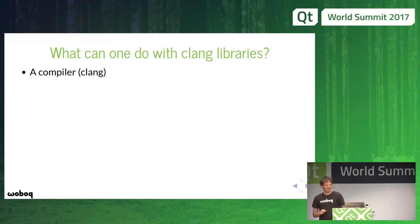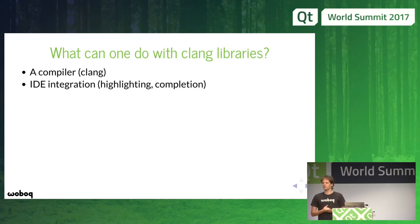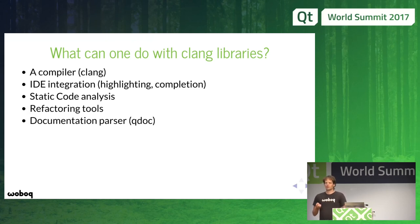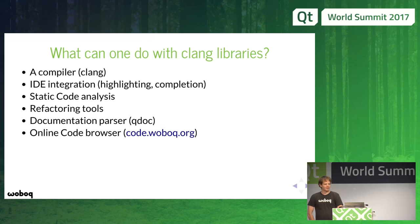We can do a compiler, of course — that's Clang. But we can also use those libraries to have the code model so the IDE understands C++. That's how we can do highlighting and completion. IDEs like Qt Creator are now moving to Clang for the code model, and KDevelop is already using it. Any tool with an understanding of the code can also do static code analysis. We can write refactoring tools. Even Qdoc is probably going, in the next release, to move to Clang — that's a project I've been working on. We can also do an online code browser, which is also a product I've been working on, using Clang to understand and browse the code.